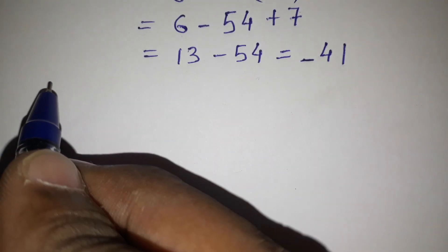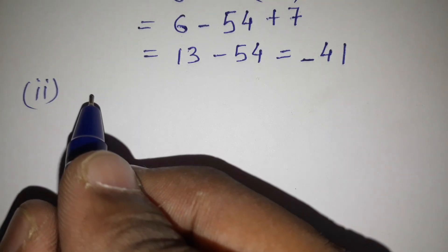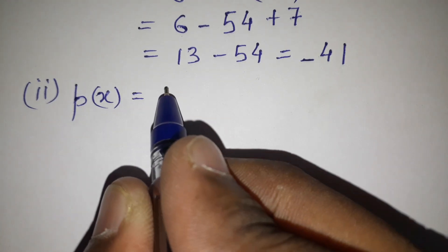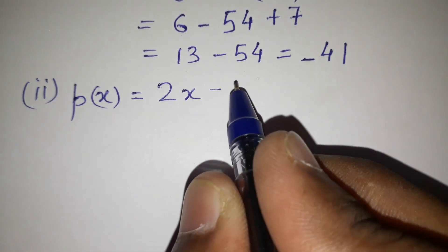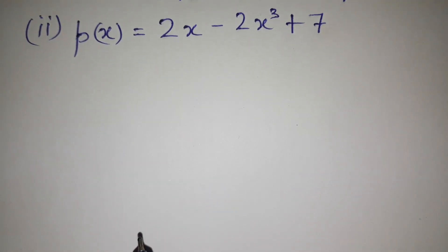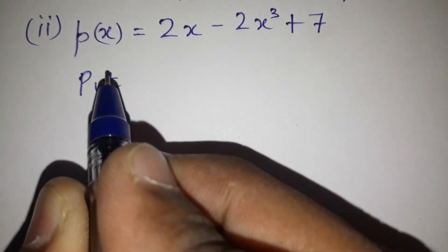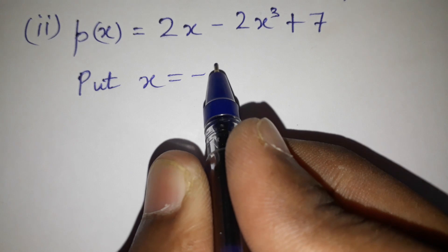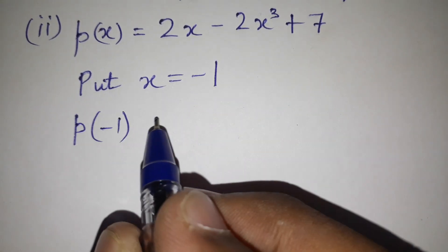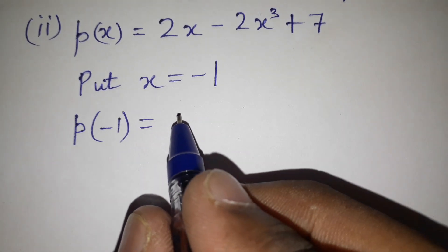Now for the second part, x is given as minus 1. We write the polynomial as p(x) equals 2x minus 2x cube plus 7, and substitute x equals minus 1, writing it as p(minus 1).